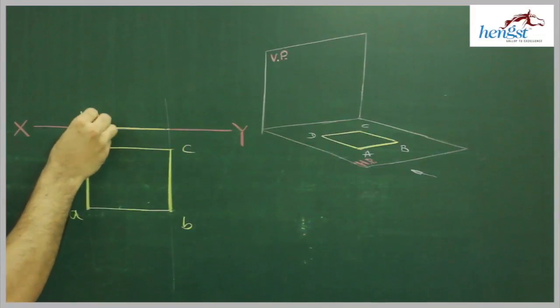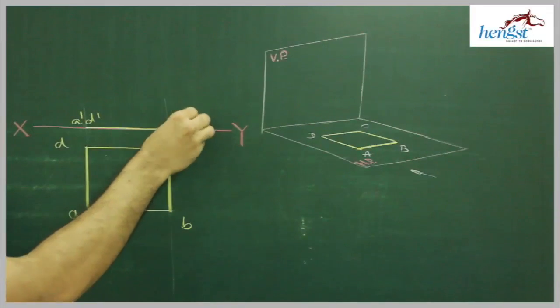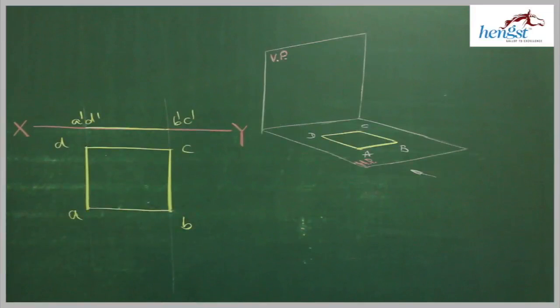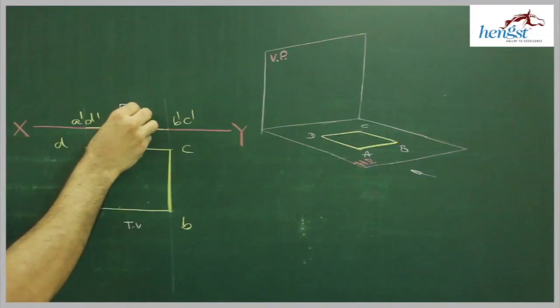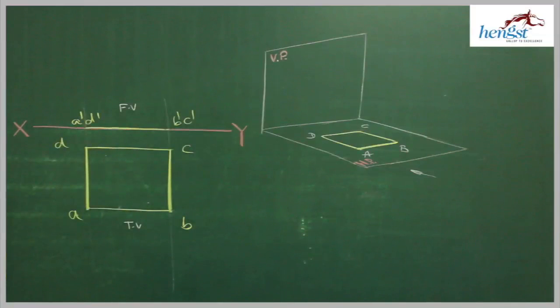So this is A dash, B dash, C dash. This is top view, this is front view of a plane ABCD.